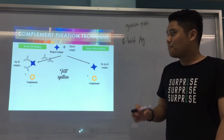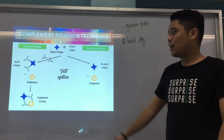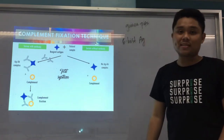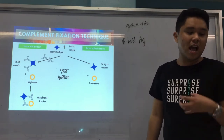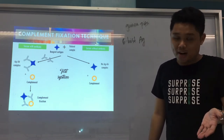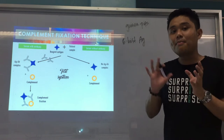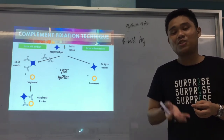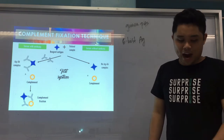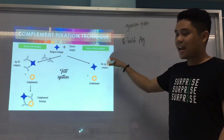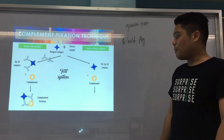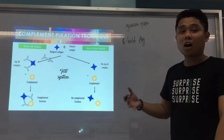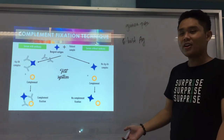When complement fixation occurs, the complements have been used up — they have already been bound to your antigen-antibody complex. In the negative scenario, since there's no antigen-antibody complex, the complement is free. There's no complement fixation; there are unfixed complements. This completes the first part of the testing system.